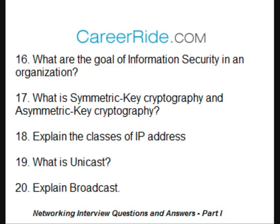Class A is used for very large networks; there are 126 Class A networks (octets 1–126), accounting for half of all available IP addresses. Class B is used for medium-sized networks, with the first octet ranging from 128 to 191; Class B networks have a first bit value of 1 and second bit value of 0 in the first octet. Class C is used for small to medium-sized networks, with the first octet from 192 to 223; Class C networks have first bit 1, second bit 1, and third bit 0.